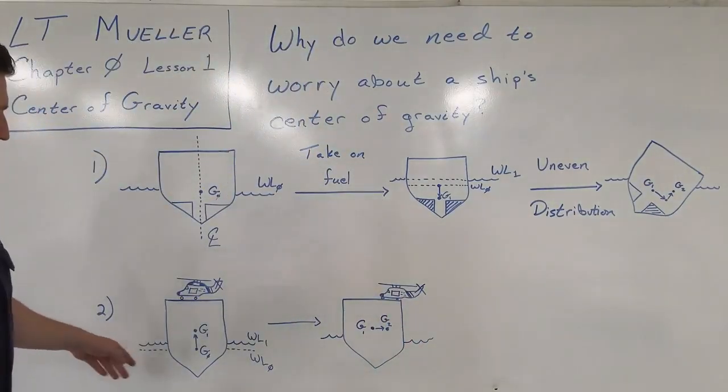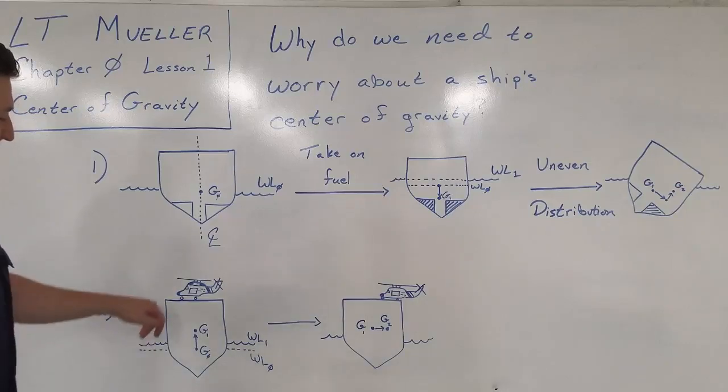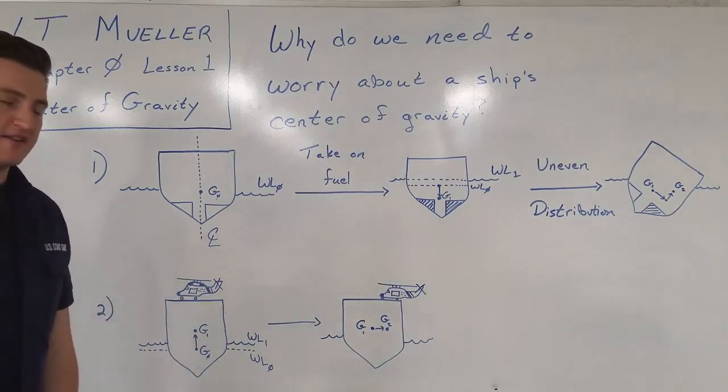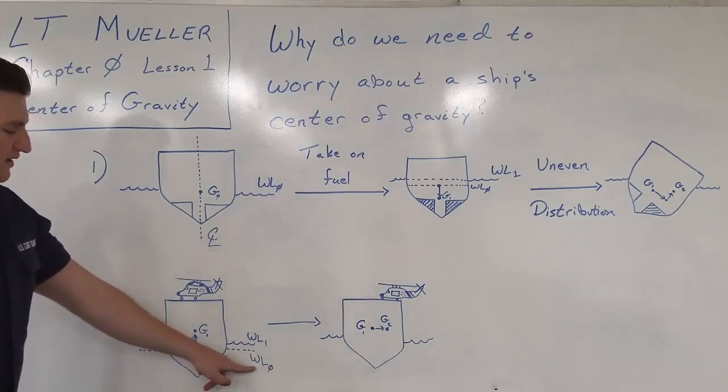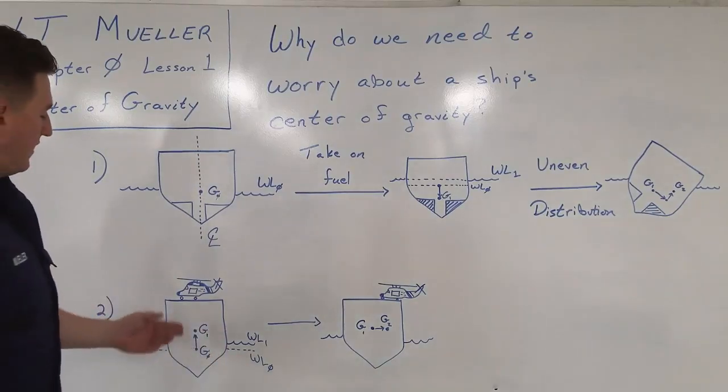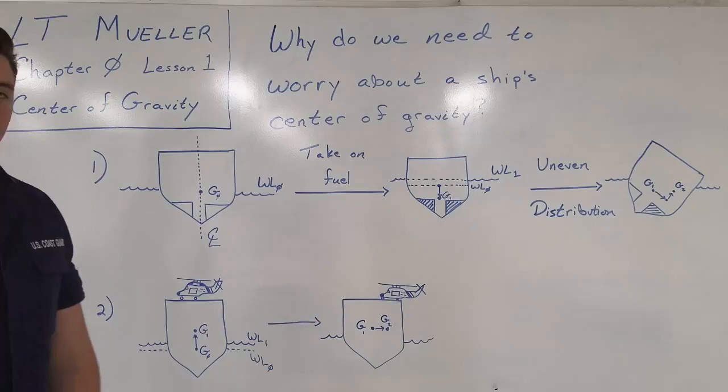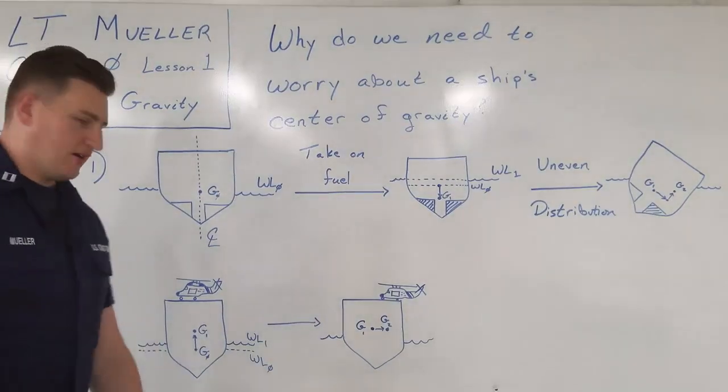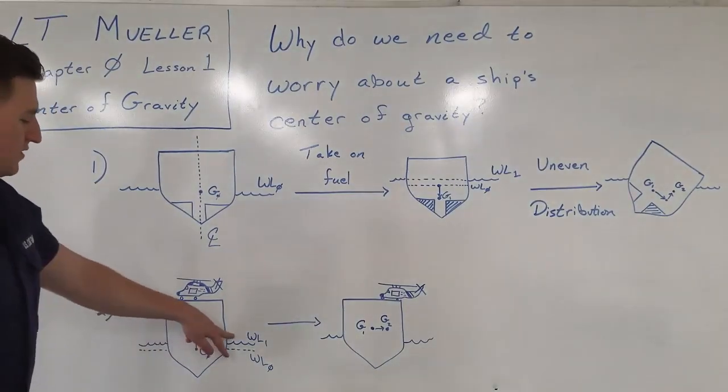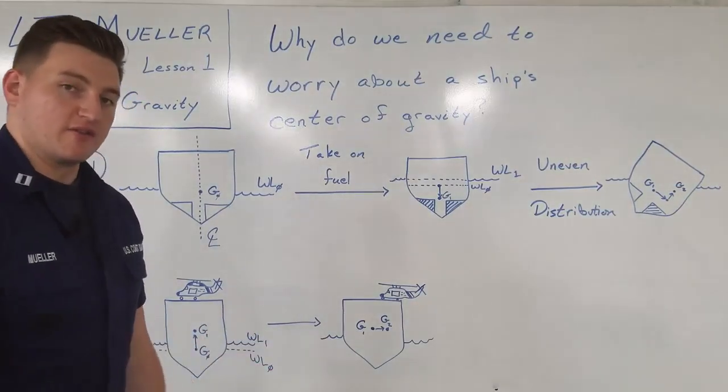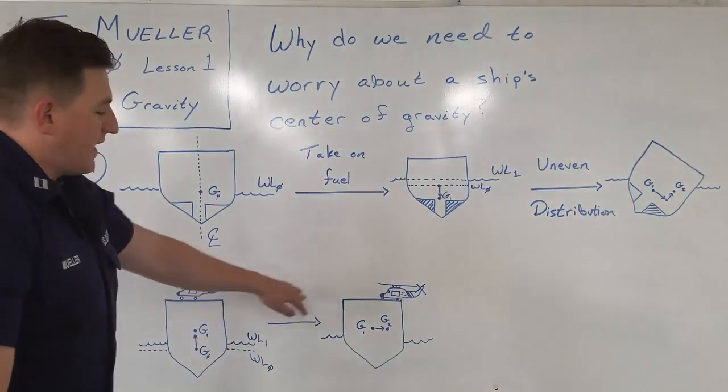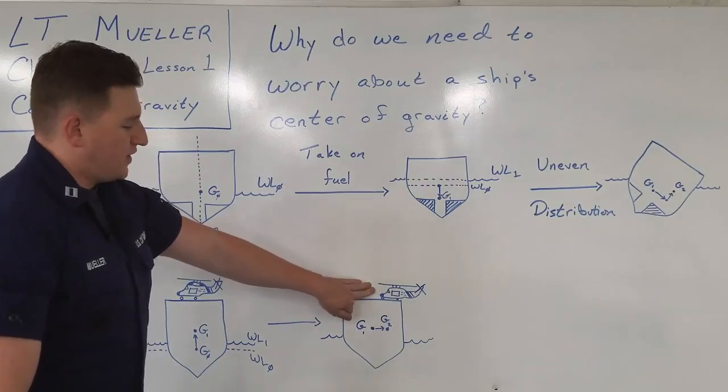In the second example, we have a ship that's underway, and it takes on a helicopter on one of its flight decks. We have an initial center of gravity, G0, an initial waterline, waterline 0. We add weight high, so we're going to have a center of gravity shifting higher, as well as we've added weight, so we're going to have the ship sink deeper into the water, which means the water level is going to rise.